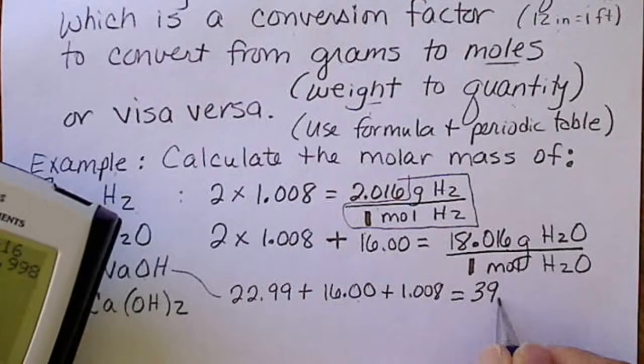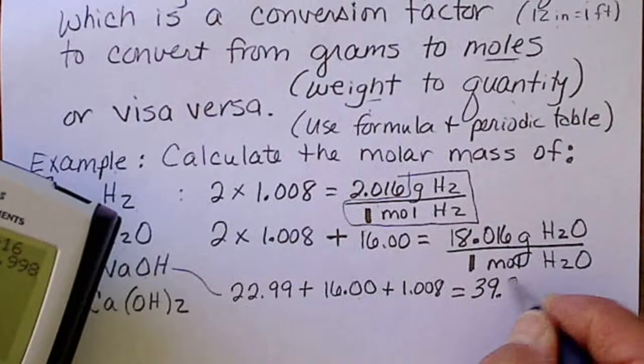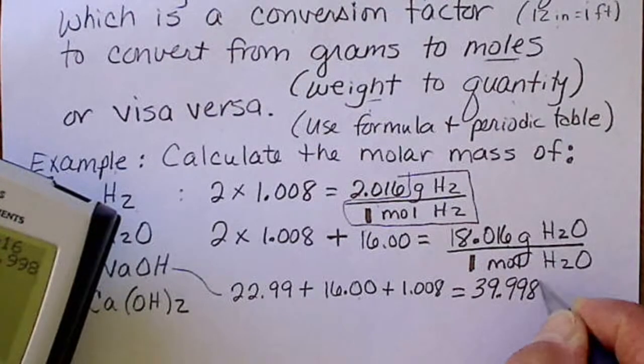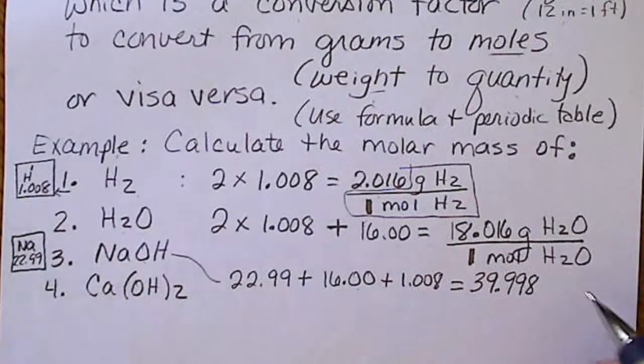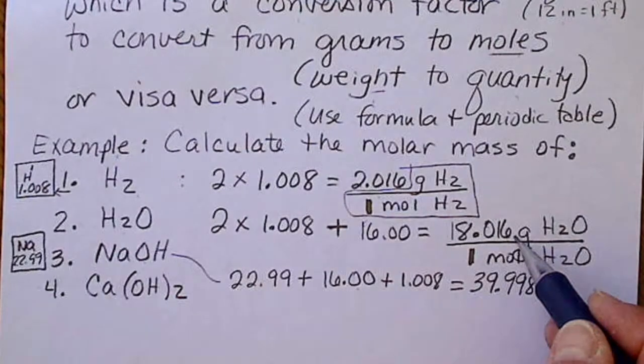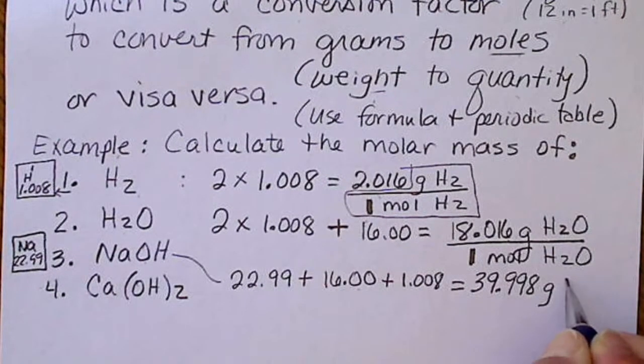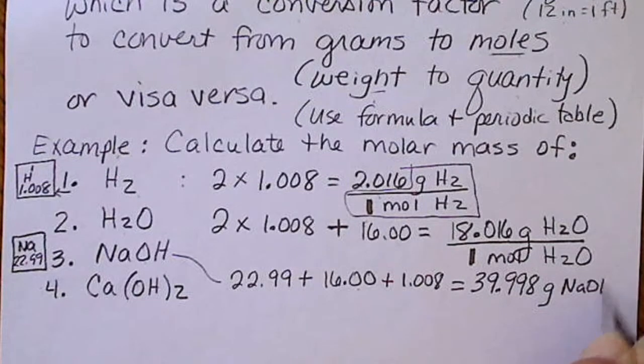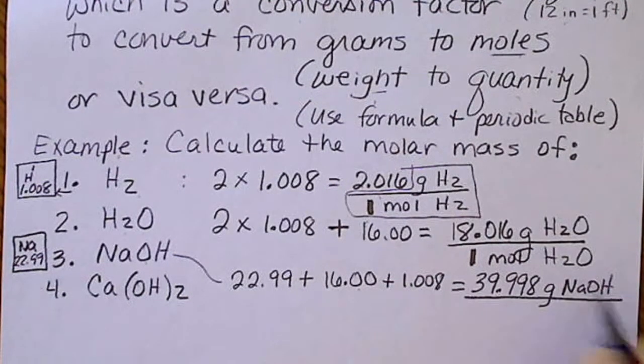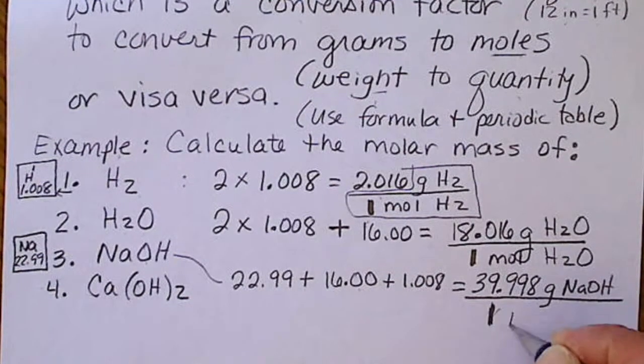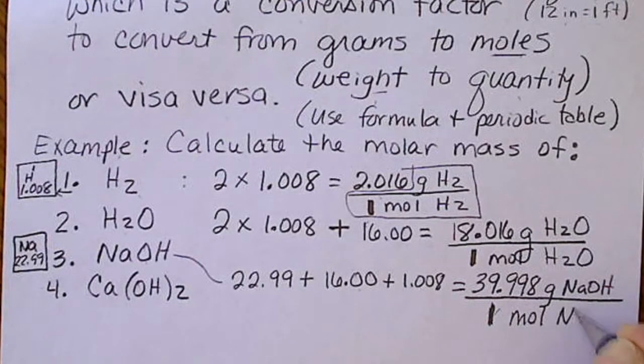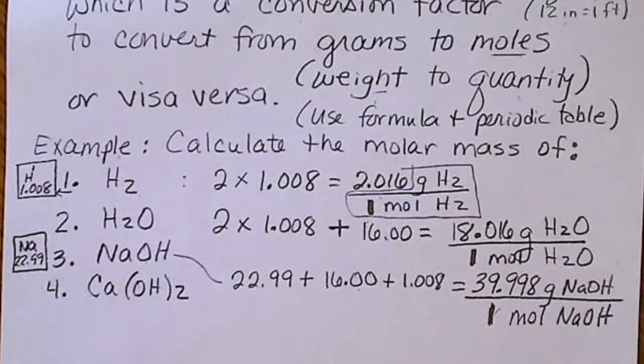We add that up, we get 39.998. We can generally leave three decimal places here, and this would be grams of sodium hydroxide per 1 mole of sodium hydroxide.